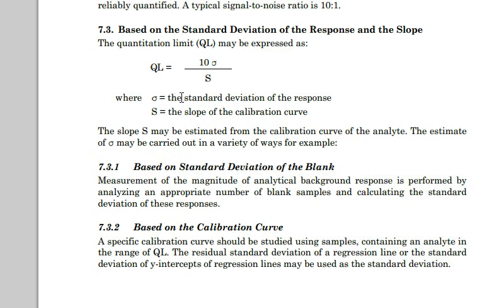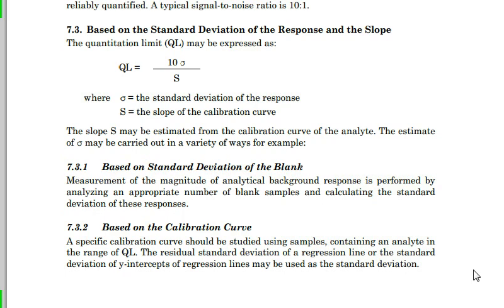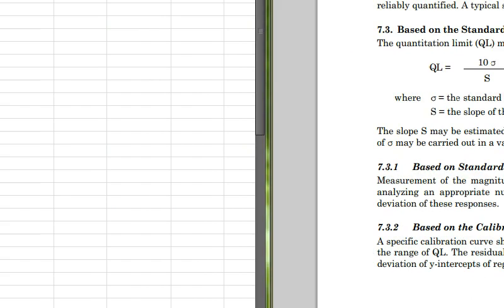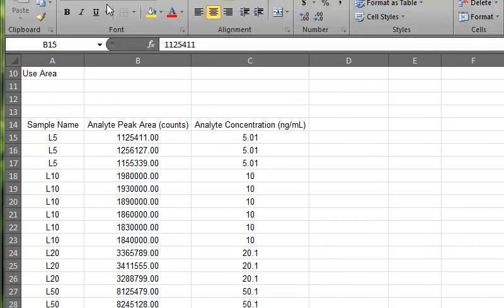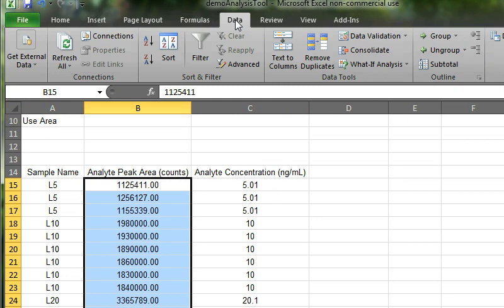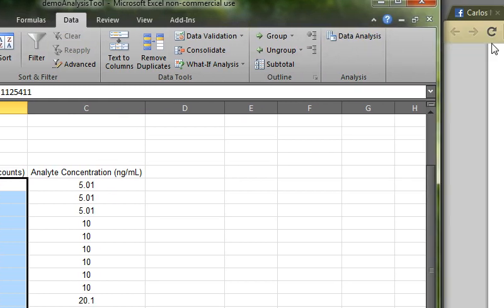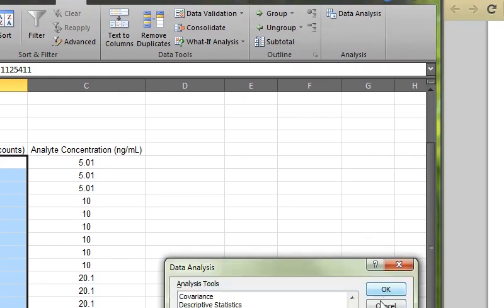How do you obtain that standard deviation of the response? ICH guidelines suggest that the standard deviation of the y-intercept of the regression line could be used as a standard deviation. So, going back to Excel, how can we get that particular standard deviation of the response or the standard deviation of the y-intercept? To do that, we need to use the data analysis option in Excel.